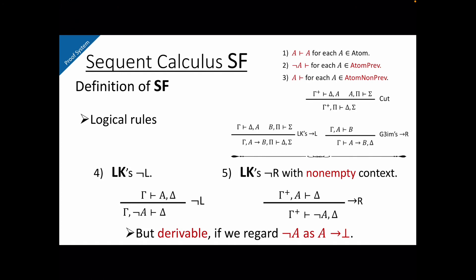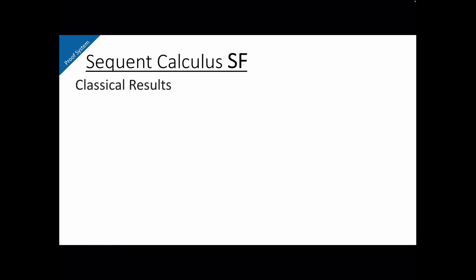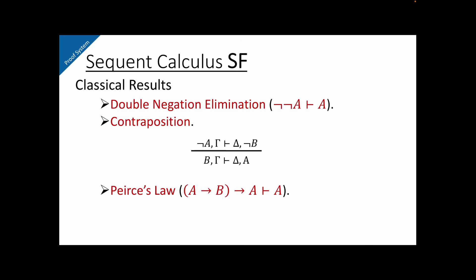This system is strong enough to prove all the intuitionistic principles. But furthermore, we can get a lot of classical results. For instance, we can derive double negation elimination, contraposition of this form, Peirce's law, and De Morgan's law of this form. So it may not be wrong to say that strict finitism is the intuitionist finitism. But when it is put in the classical framework, it goes beyond intuitionism, and it gets quite close to classical logic.